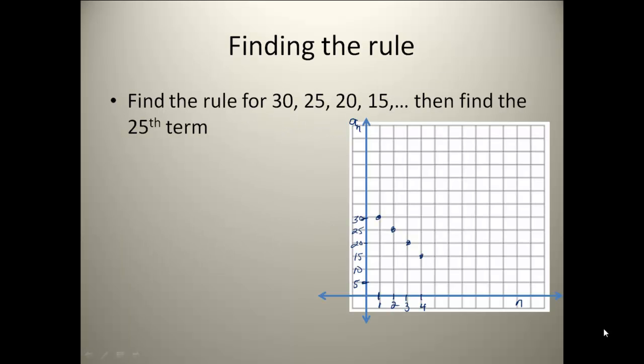Here's our first example. It says find the rule for the sequence 30, 25, 20, 15... and then find the 25th term. The first thing you have to do is check to make sure it's arithmetic. So we want to look at the difference between consecutive terms.